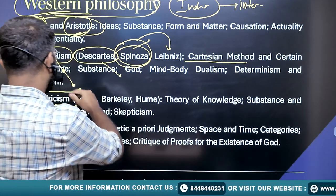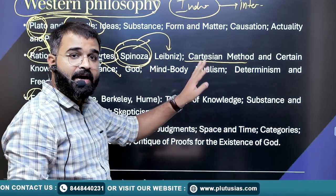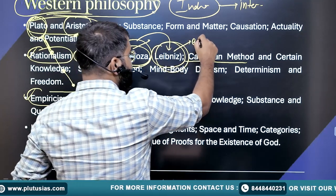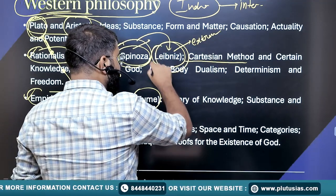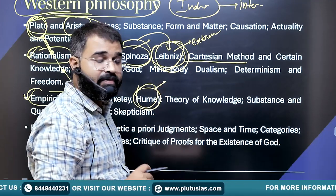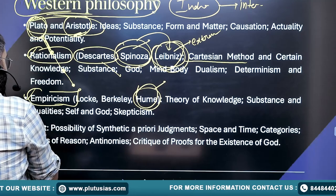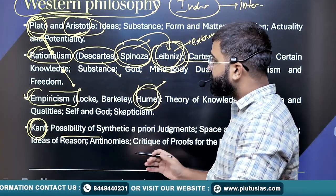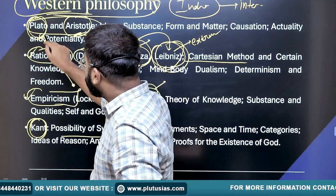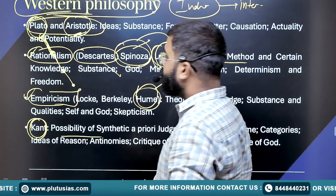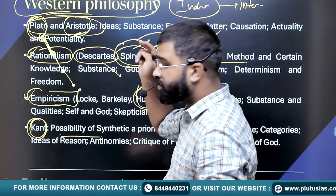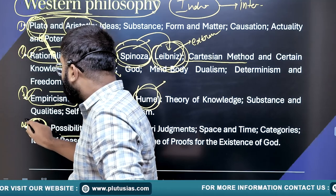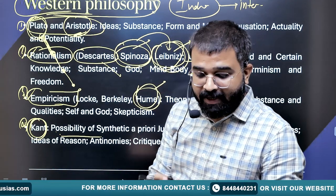Three philosophers are mentioned in rationalism and three in empiricism. The final philosopher in each tradition gives a theory that is extreme in nature — Leibniz in rationalism and Hume in empiricism. These extreme theories are criticized by Kant, who synthesizes them. The tip regarding paper one, Western philosophy, is to learn all the philosophers in a chain and in sequence — don't jump directly to empiricism or to Kant.